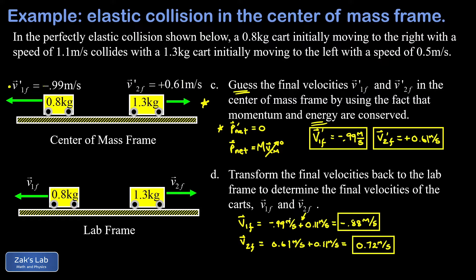The final check is left to the viewer: compute the initial and final momenta and kinetic energies using the lab-frame velocities, and you'll find within rounding error that these are the correct solutions. This approach is far better than the brute-force method of conserving momentum and energy directly in the lab frame, which produces a nonlinear system of equations. Instead, we shifted perspective into a reference frame where the collision became trivial, then moved the answer back — a great prototype for how theoretical physics works.